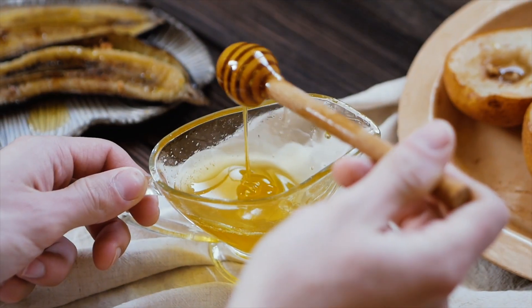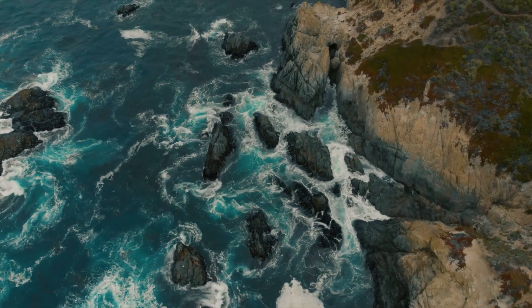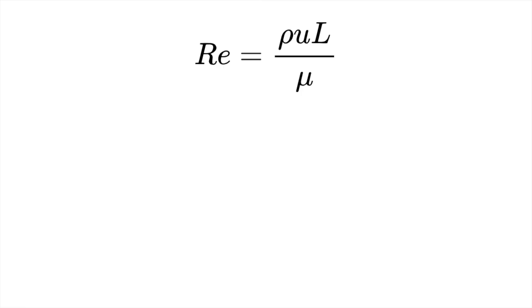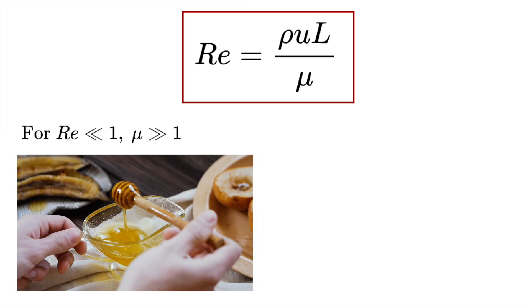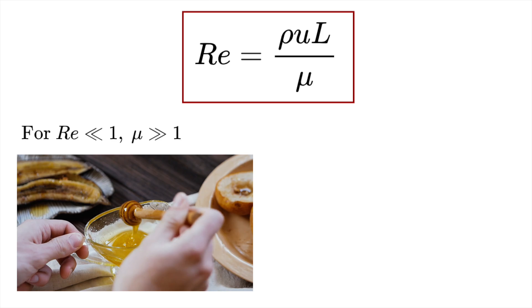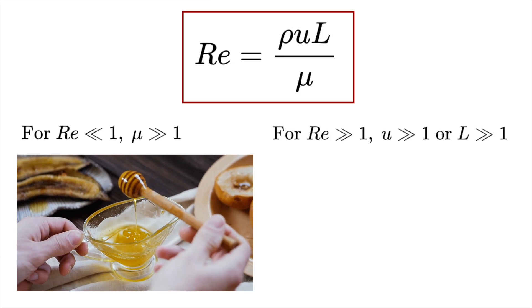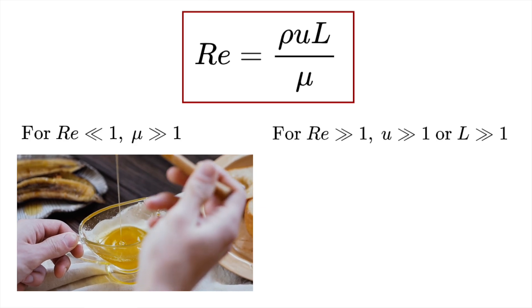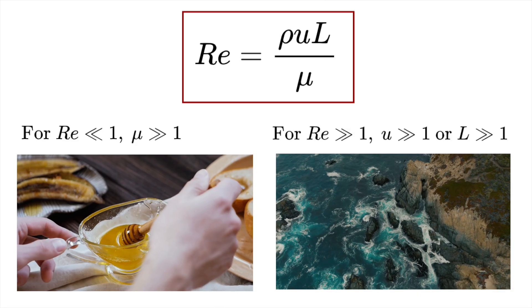Typically a low Reynolds number is attributed to laminar flow and a high Reynolds number is attributed to turbulent flow. For a low Reynolds number the viscosity needs to be incredibly high — just think of honey, which has incredibly high viscosity and flows like a laminar flow. If you increase the velocity or the size of the flow, the Reynolds number becomes incredibly high and therefore turbulent.